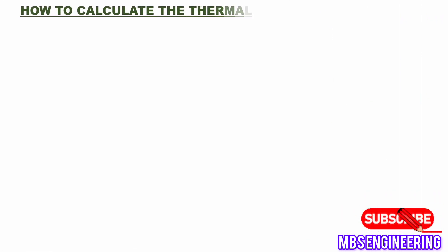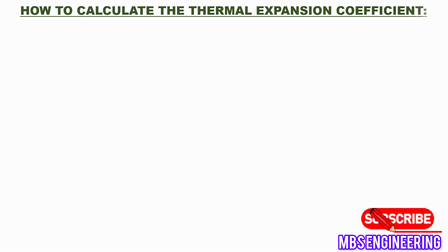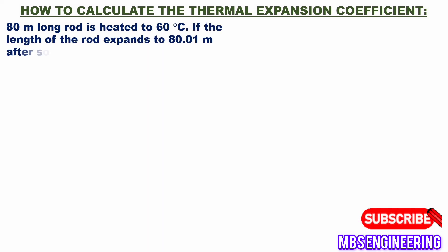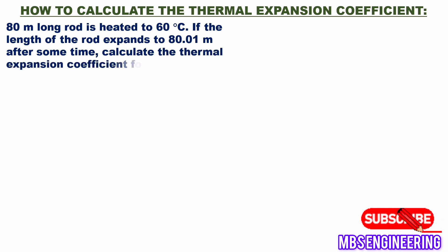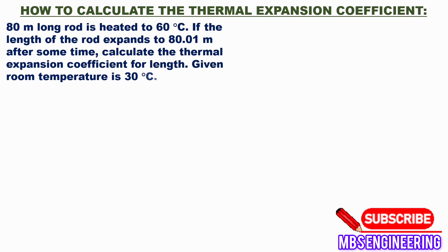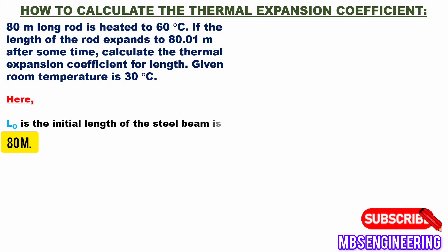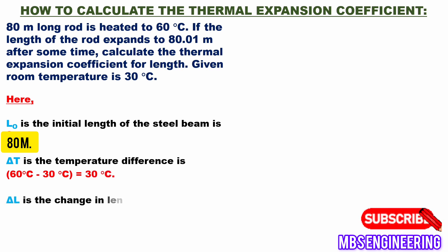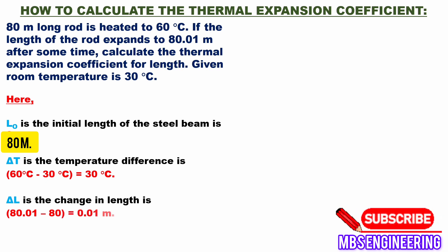An 80-meter long rod is heated to 60 degrees Celsius. If the length of the rod expands to 80.01 meters after some time, calculate the thermal expansion coefficient for length. Given room temperature is 30°C. L₀ = 80 m, delta T = 60 − 30 = 30°C, delta L = 80.01 − 80 = 0.01 m, and alpha_L is to be calculated.